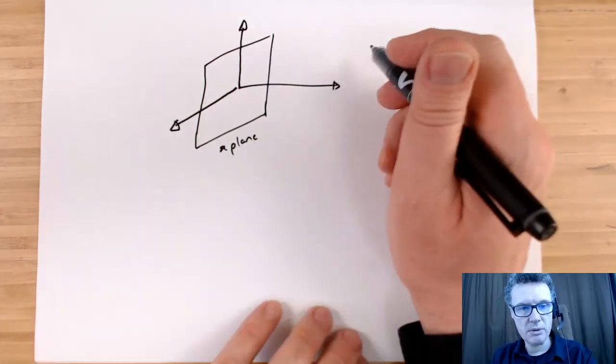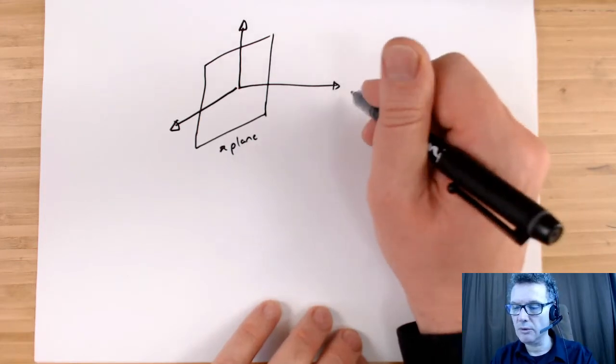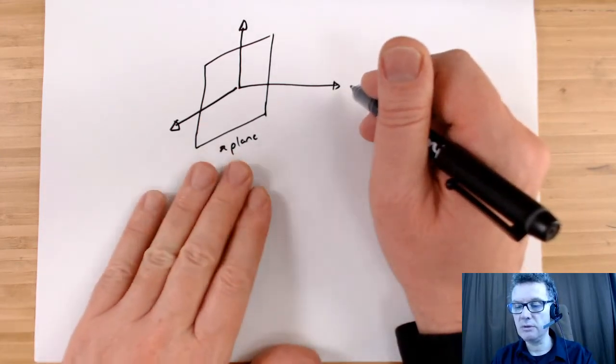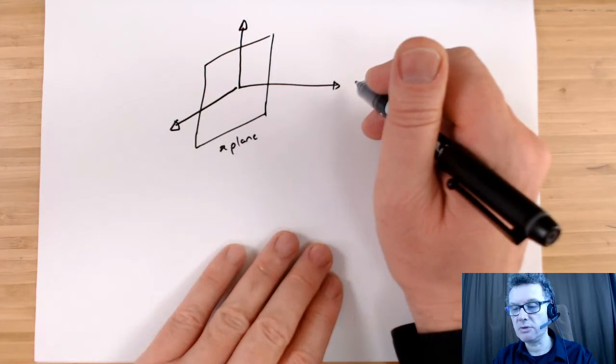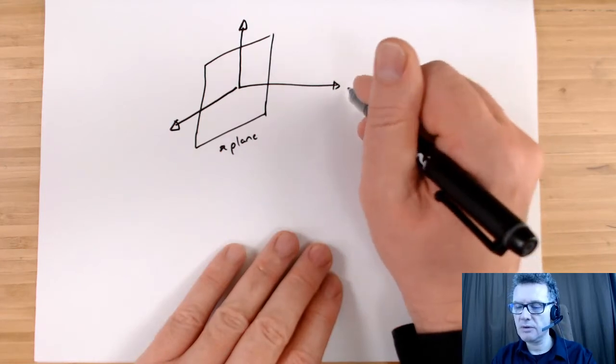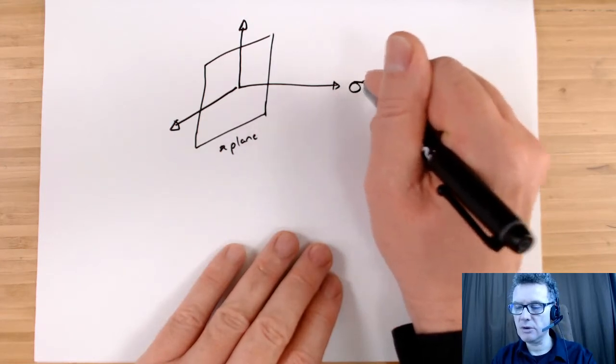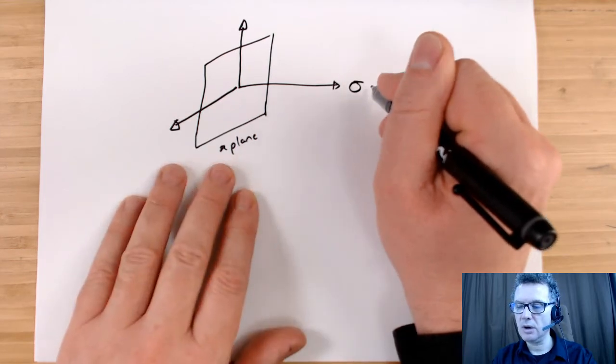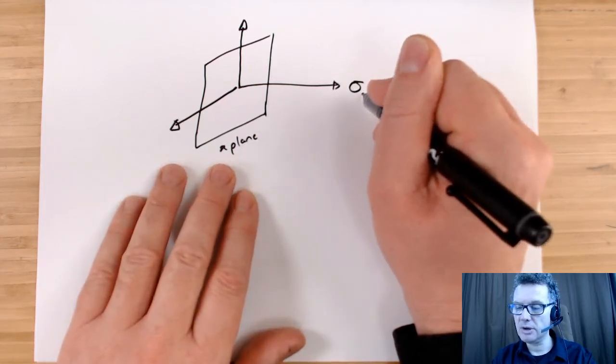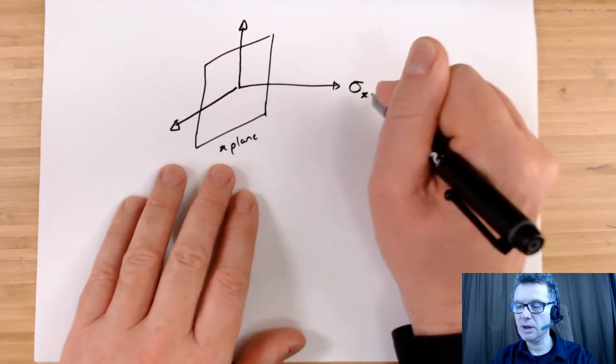So I can now label this up as forces. Although, since we're doing force divided by area, we'll do it in terms of stresses. So the first force that we've got is coming off in the x-direction. We are on the x-plane.